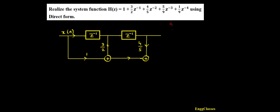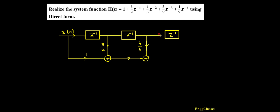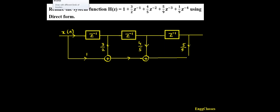Similarly moving further, I need another delay element — z⁻³. I already have two delay elements; this is going to be the third delay element. Let me join these two points. I want 5/9 z⁻³. So again extend this line, and here I'm going to multiply this — I'm going to call it 5/9 z⁻³. I have to add this with the previous signal, so I should have an adder at this point.